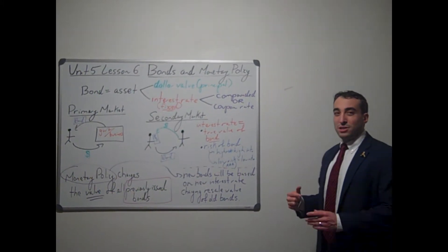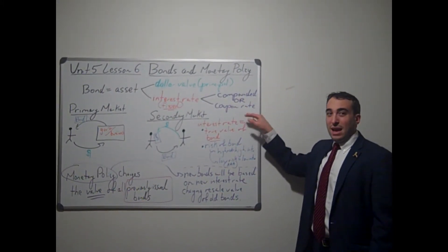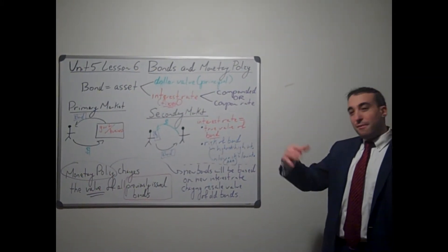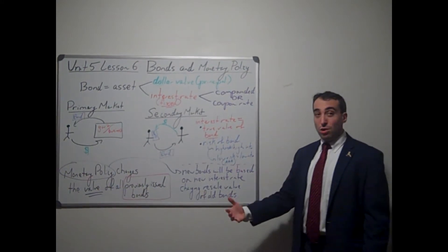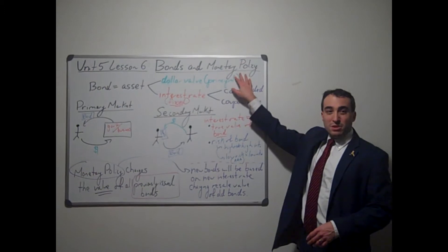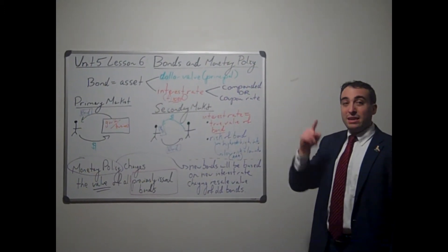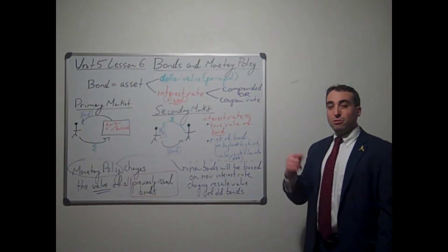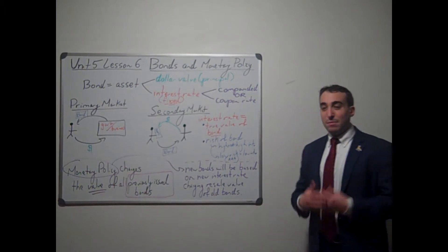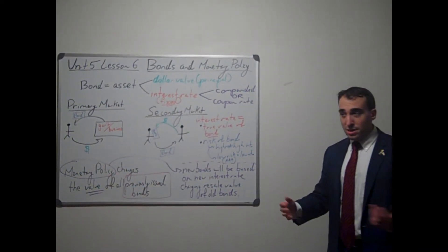Or, some bonds are known as income bonds and have what is called a coupon rate. If it's a $100 bond at 5%, that means every year for every bond you own, the principal sits there in value, but that bond generates a yearly income. So every year you would receive $5 per bond.